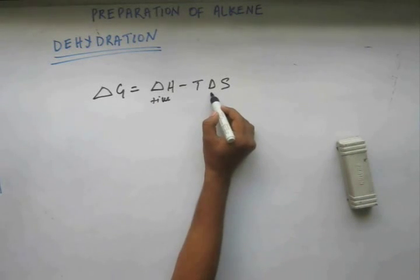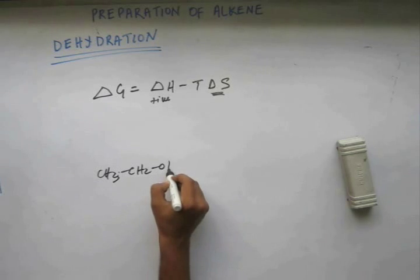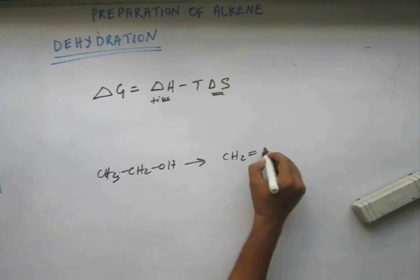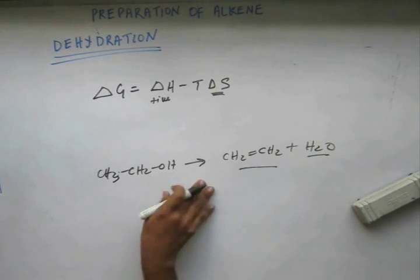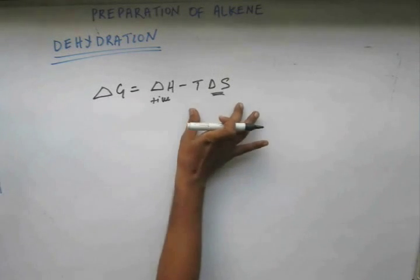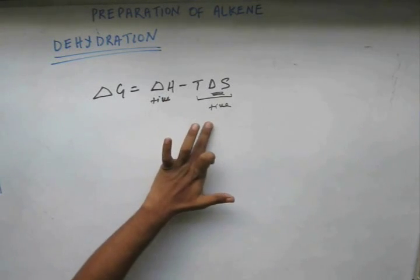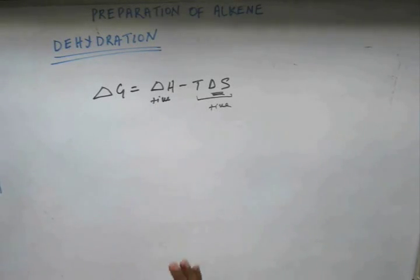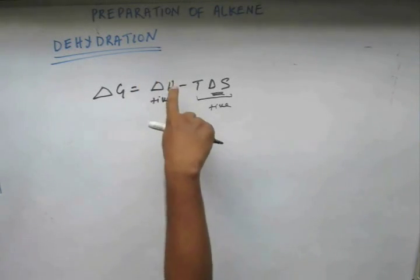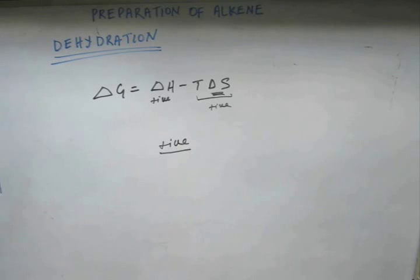Now ΔS is the change in entropy. You have an alcohol and as a product you are getting an alkene and water — two molecules out of one molecule — so the number of molecules is increasing, entropy increases, and ΔS is positive. Temperature in Kelvin is always positive, so the TΔS term is positive. At lower temperature, TΔS would be smaller, so ΔH minus TΔS will be positive — a bigger number minus a smaller number gives a positive ΔG. When ΔG is positive, the reaction will not be spontaneous, meaning dehydration is not going to take place and alkene will not be formed.